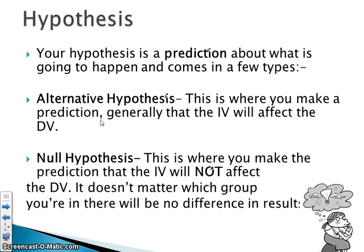A hypothesis is a prediction — your prediction of what is going to happen in your experiment and what the results will be. There are two main types. There's the alternative hypothesis, where we make a prediction about how the IV will affect the DV. For example, students who revised with music on would recall less information than those who revised in silence. The null hypothesis is the opposite: you predict there will be no difference — the IV will have no effect on the results of the memory test. So the alternative hypothesis predicts a difference; the null hypothesis predicts no difference.